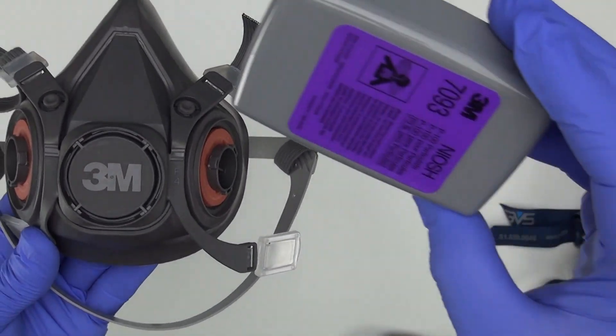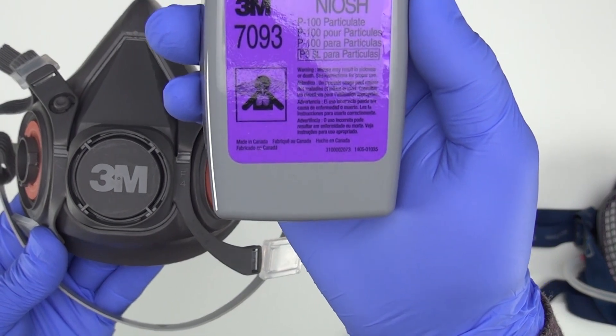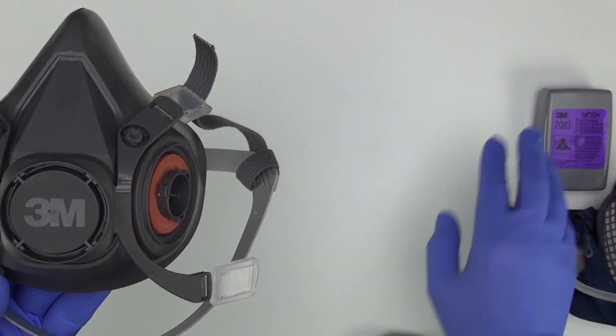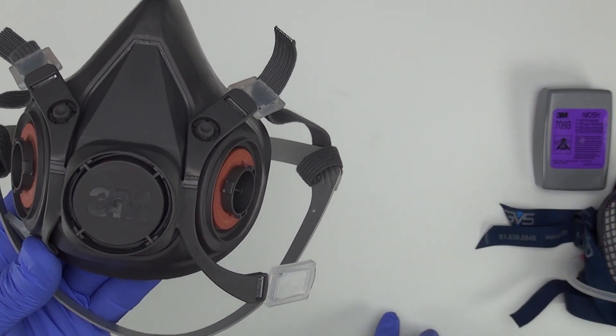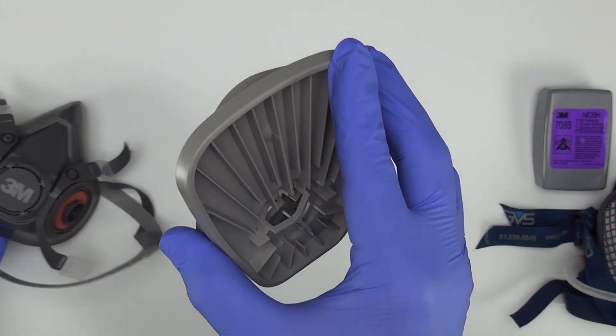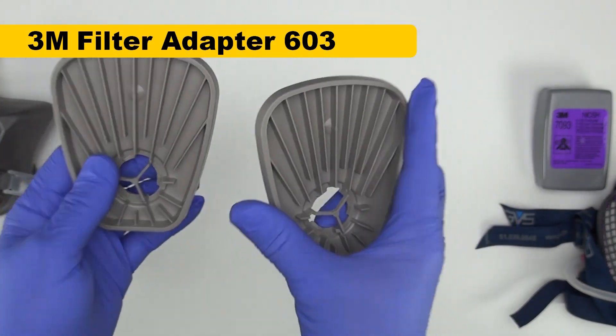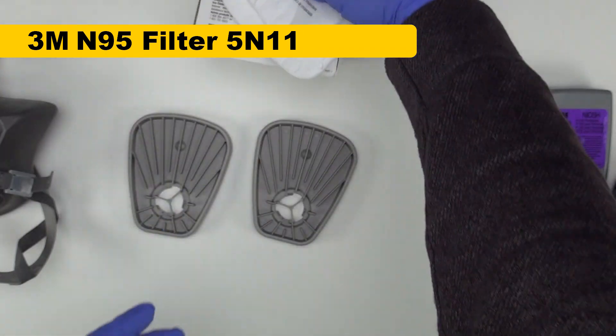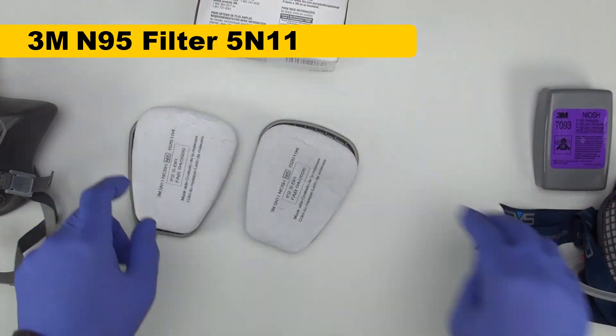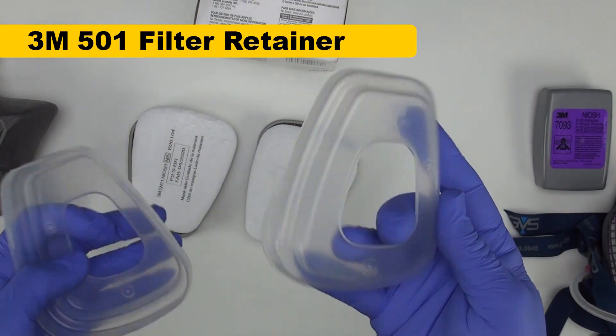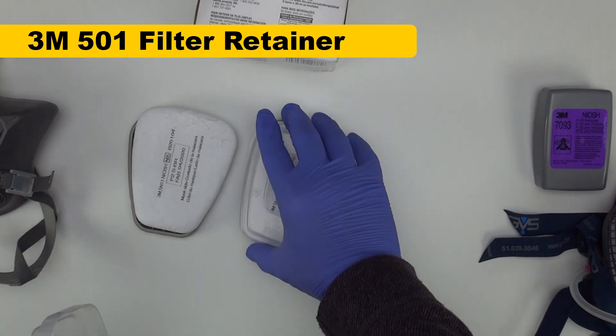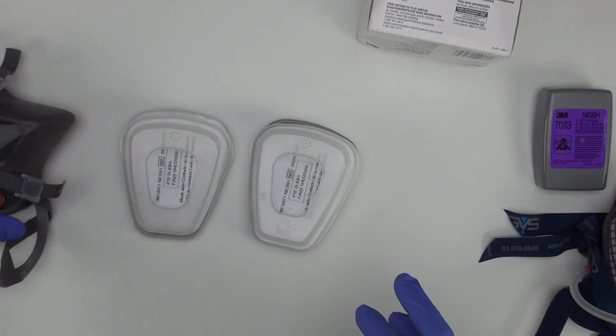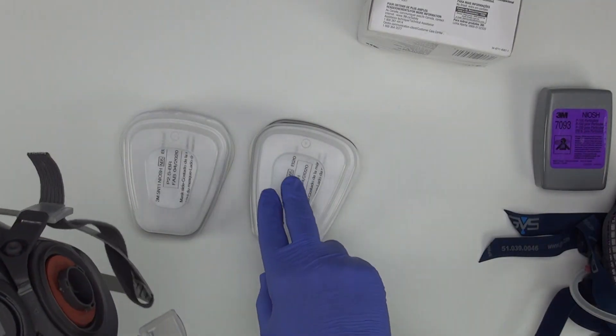And then you can buy these 7093 cartridges, or you can put together a combination to create N95 cartridges, which means you have to buy these bottom plates, buy a box of these filters, and separately buy these filter covers. That turns out to be kind of inconvenient just to get filters for this mask.